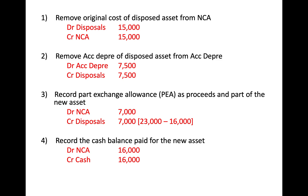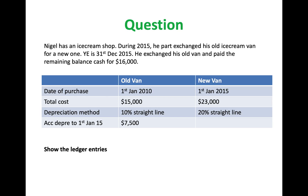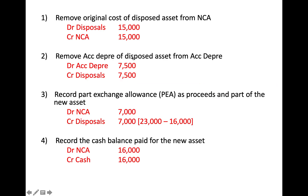The fourth step is to record the amount that you are going to pay, which is also given to you as $16,000. Therefore, you credit cash because cash is going out and you debit your non-current assets.